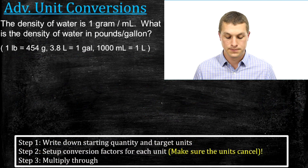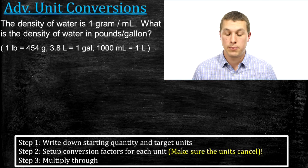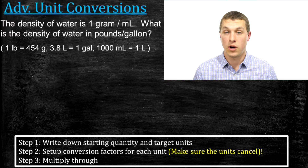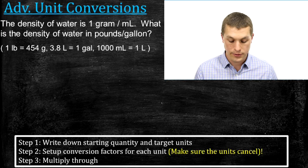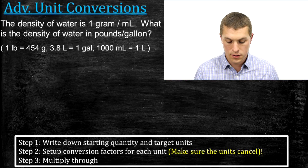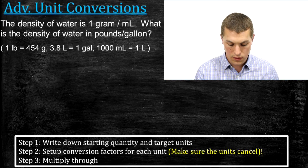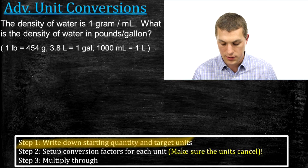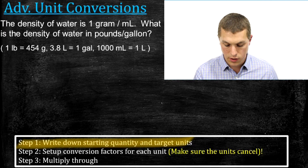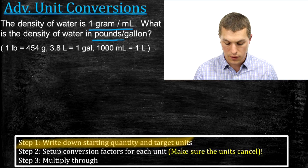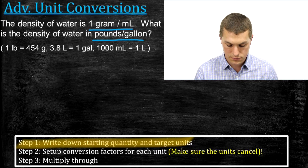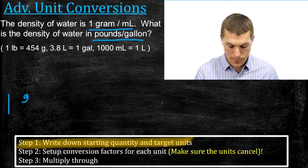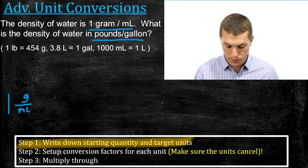Last example problem: the density of water is one gram per milliliter. What's the density of water in pounds per gallon? The key is to write down the starting quantity and target units. Our starting quantity is one gram per milliliter, and our target units are pounds per gallon.